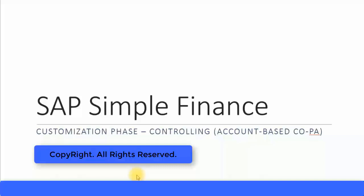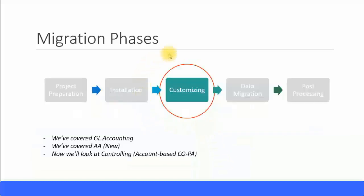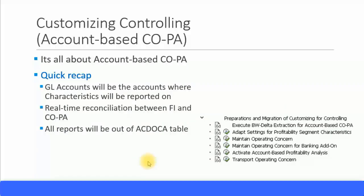Let's look at the customizing phase of the controlling module, specifically for account-based COPA. We are still in the customizing phase, which is the third of the migration phases. We have already covered customizing general ledger accounting and asset accounting new. Now the final activity of the customizing phase is the customization of the controlling module, specifically account-based COPA.